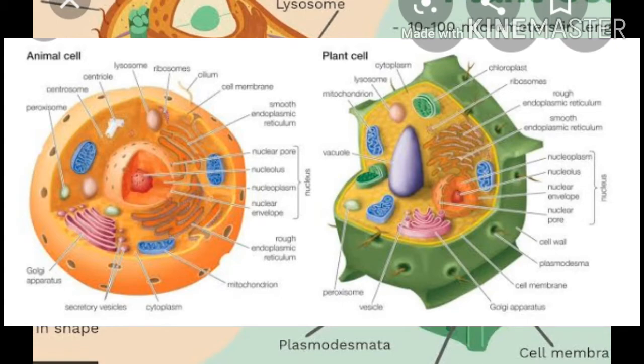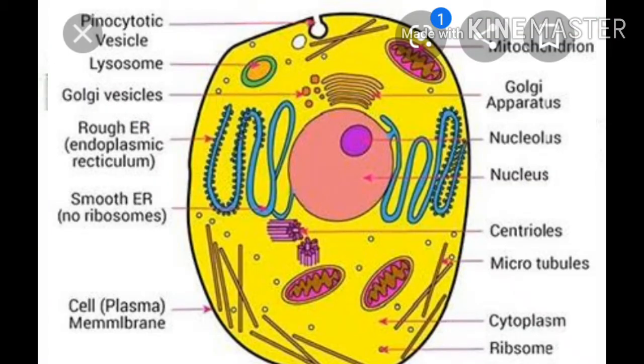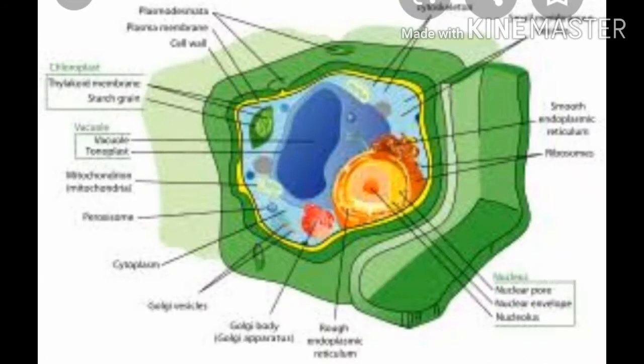In animal cells, the cell may change shape and move about. In plant cells, shape and position do not change.